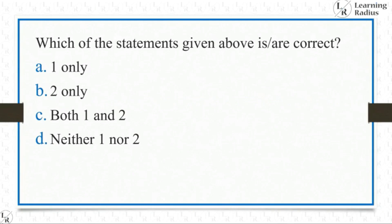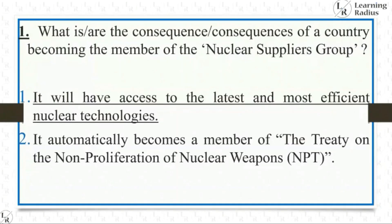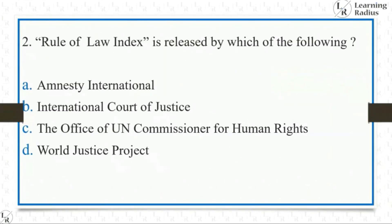If you look at the statements: it will have access to the latest and most efficient nuclear technologies — that is absolutely right. And it automatically becomes a member of the Treaty on the Non-Proliferation of Nuclear Weapons, NPT — that is absolutely wrong. The first statement is right and the second statement is wrong. So the answer is one only.